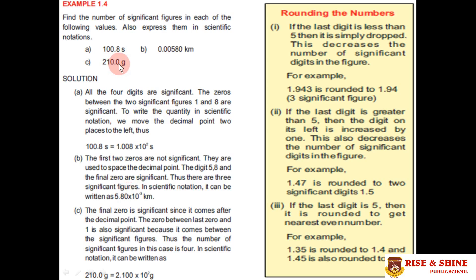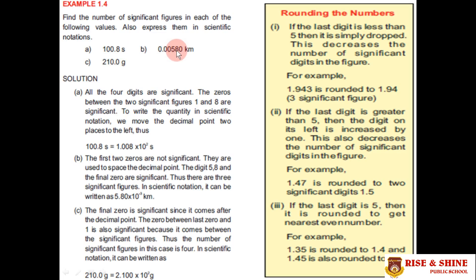For part C, 210.0: the trailing zeros after the decimal are always significant according to rule three, so this value has four significant figures. Converting to scientific notation, we move the decimal point two places to the left to get 2.100 × 10². The power is positive (+2) because we moved the decimal from right to left, whereas in part B we moved it left to right giving a negative power (−3).